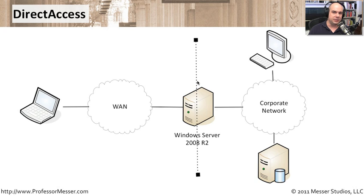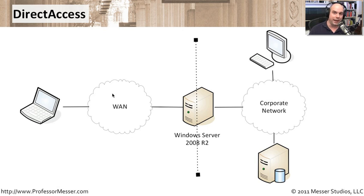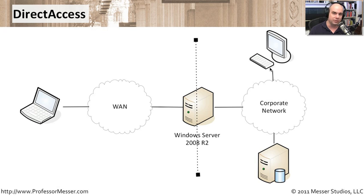Let's look at the process that takes place when we connect a computer to the network and try to communicate back to our central office using direct access. The laptop may be at an off-site location — a coffee shop or home office — with a WAN or internet connection. In the middle of the picture is our Windows Server 2008 R2, and behind that server is our corporate network with other computers, servers, and devices we may need access to. The first thing that happens is your computer makes the connection to the network and tries to determine if it's on the corporate network.